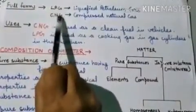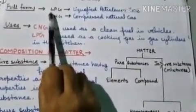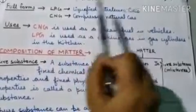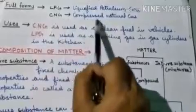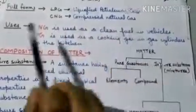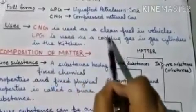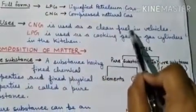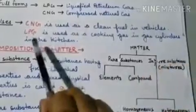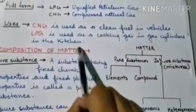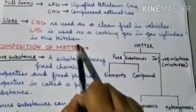Here you can see the full forms of LPG and CNG. The full form of LPG is Liquefied Petroleum Gas, and the full form of CNG is Compressed Natural Gas. CNG is used as a clean fuel in vehicles, and LPG is used as a cooking gas in gas stoves in the kitchen. You are familiar with these uses.